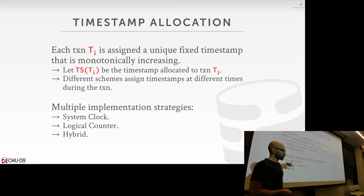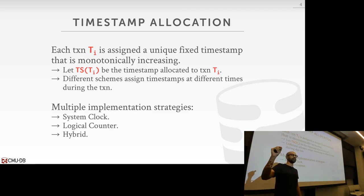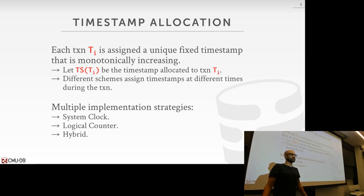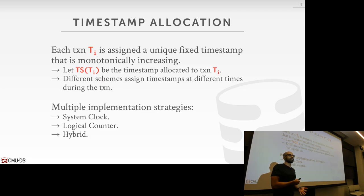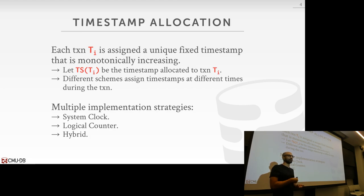Another option is logical counters — a register in the CPU dedicated to a monotonically increasing 32-bit or 64-bit value. For a distributed system, you'd still need to coordinate counters across CPUs. Assuming a single counter that you can increment atomically without locks, one potential problem is overflow: if you run out of 32-bit values, your counter rolls back, meaning it goes backwards in time.